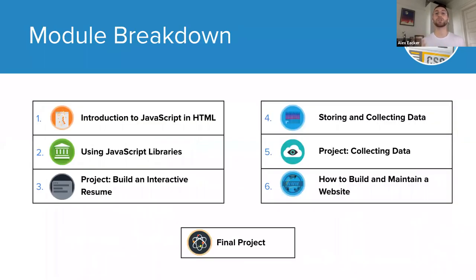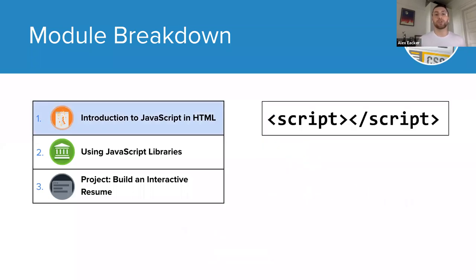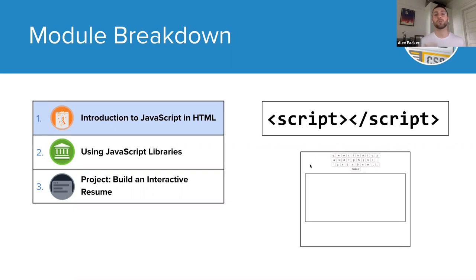The course is broken down into six distinct modules and culminates in a final project. The first module introduces how JavaScript is used in web development. Students are introduced to the script tag and the Document Object Model and learn how to create and manipulate HTML objects to dynamically alter their web pages. By the end of the module, students will be able to create a keyboard from scratch using only JavaScript, learning about event listeners and incorporating new elements into a web page.